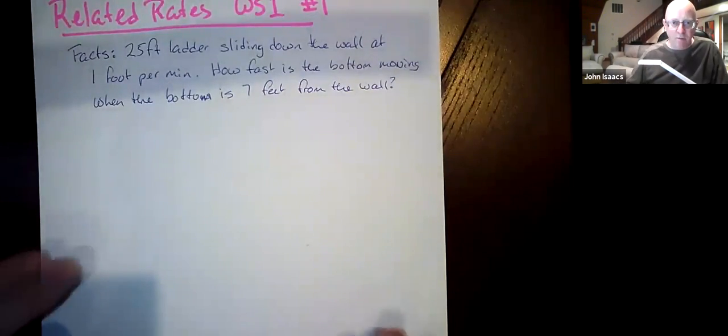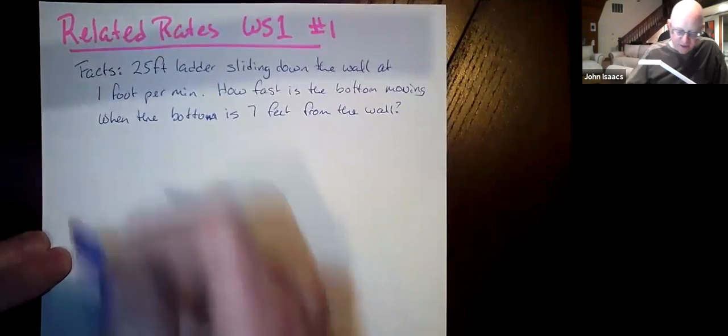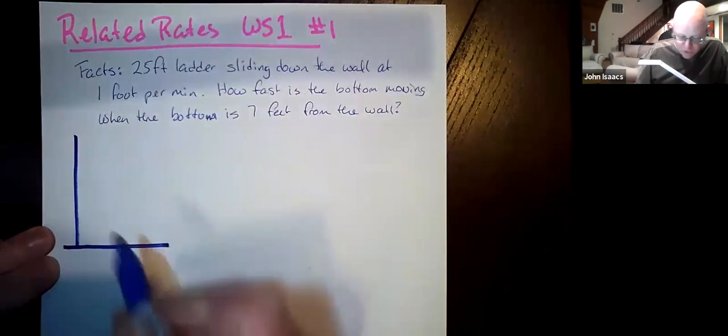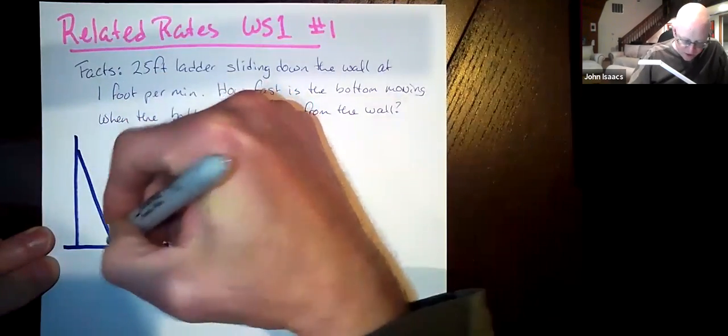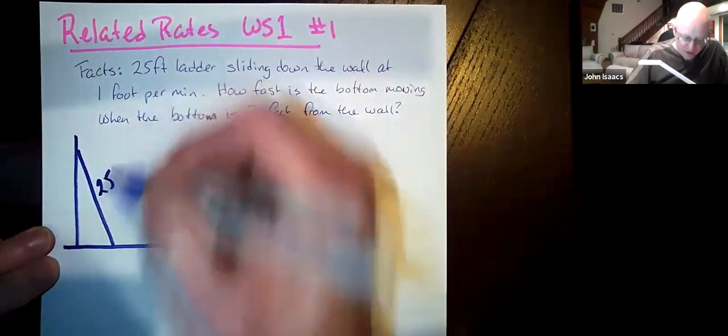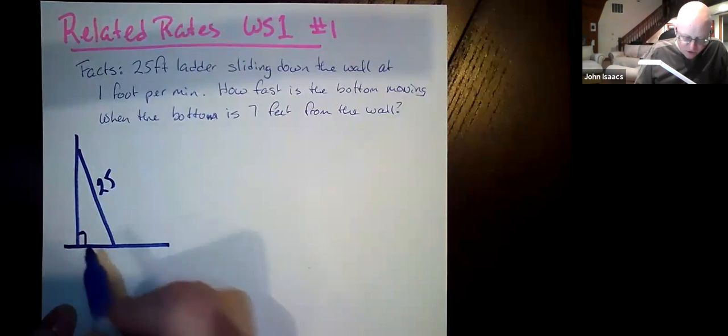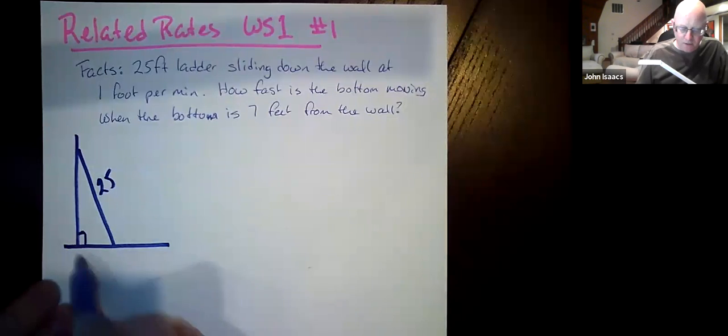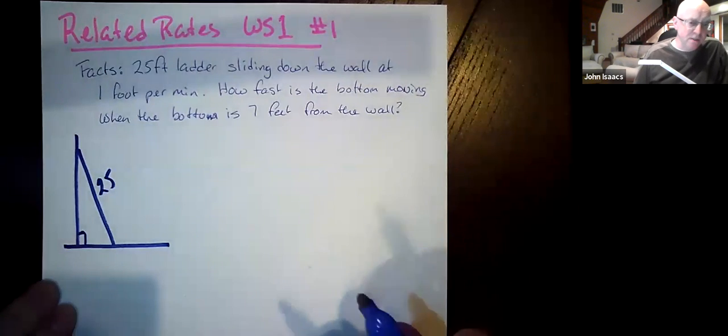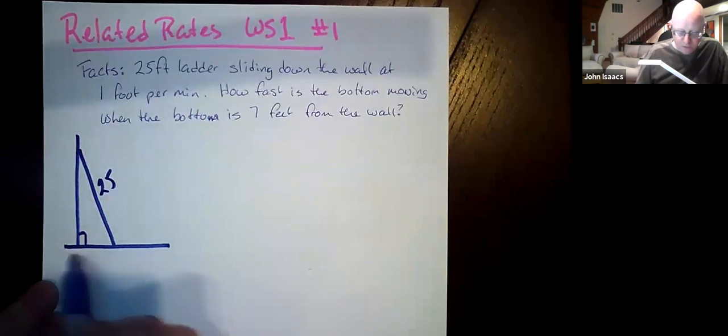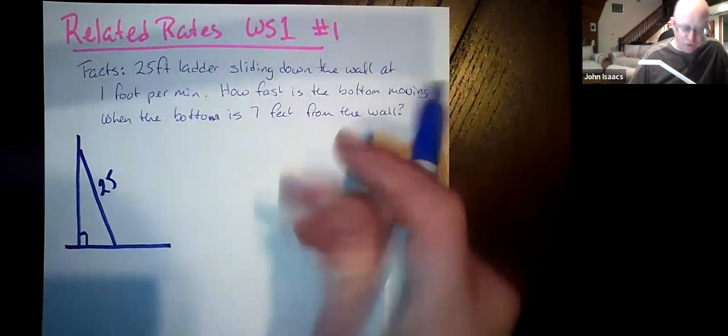So typically we start these problems with some sort of a diagram. So let's make our vertical wall, let's make our floor, let's make our 25-foot ladder that's leaning against the wall. And we immediately see that this is a right triangle because we had a vertical wall, and it didn't actually mention that we had a horizontal floor. If we had a hill here, this wouldn't work, but we'll have to assume that we have a horizontal floor as well.